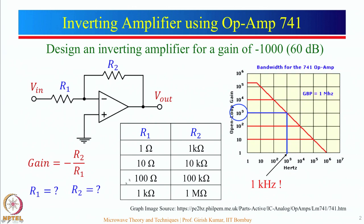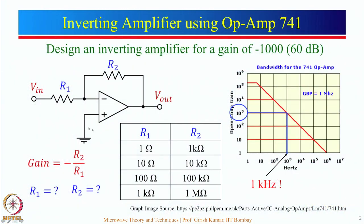That means if we choose a value of 1kΩ for R1, then R2 comes out to be 1MΩ. Now, 1MΩ resistors are available, but if you think about a practical 741 op-amp, it has an input impedance between the two ports equal to 2MΩ. This 2MΩ comes in parallel with R2. So if you choose R2 = 1MΩ, you will not get a gain of 1000 — in fact, the gain will be slightly less than that.